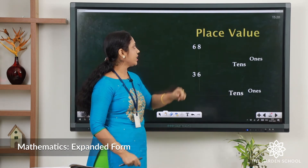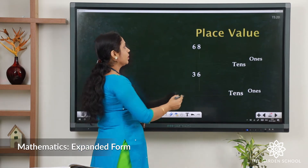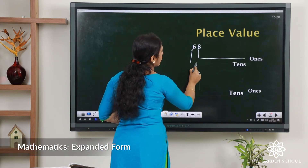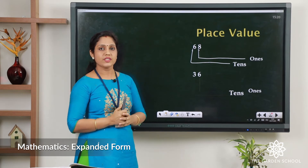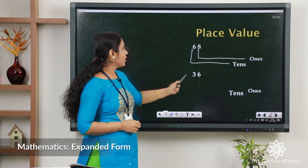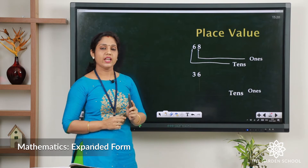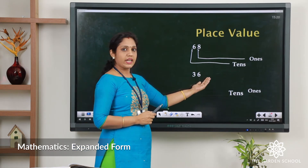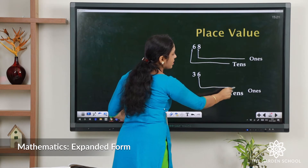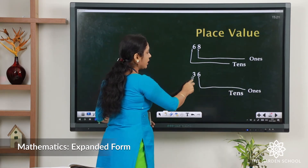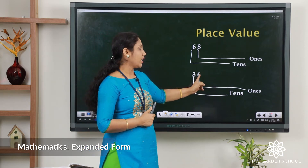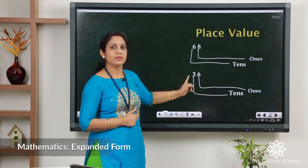The number 68 is again a two-digit number. We can count: eight ones, six tens. What is the place value of 6? It comes in the tens position, and six tens makes 60. Next example: 36. It is again a two-digit number. Counting from the right side — six comes in the ones position and three comes in the tens position. The place value of 6 is 6, and the place value of 3 is 30.